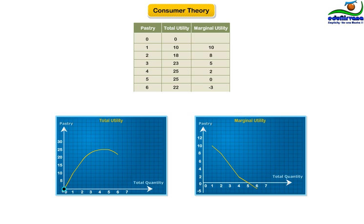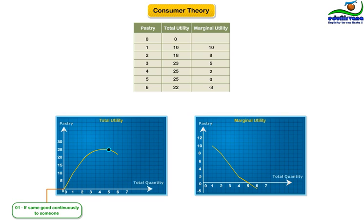To summarize: if you give identical units of the same good continuously to someone, each unit will add less and less to the amount of happiness and overall sense of well-being, and happiness would start reducing after the threshold is reached. This behavior is known as the law of diminishing marginal utility.